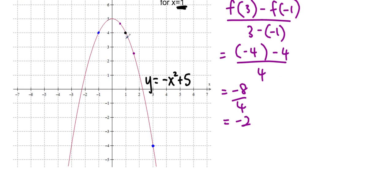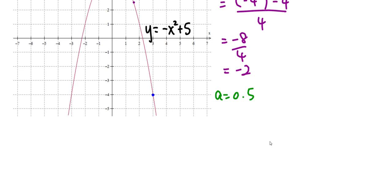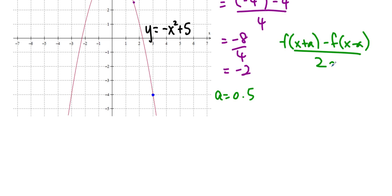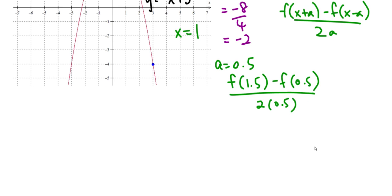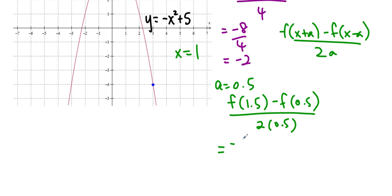Then we're going to try it for the smaller interval, so a equals 0.5. The formula is f of x plus a minus f of x minus a over 2a. So plugging in x equals 1: f of 1.5 minus f of 0.5 over 2 times 0.5. I know the formula is negative x squared plus 5, so it's going to be negative 1.5 squared plus 5, minus negative 0.5 squared plus 5, over 1.